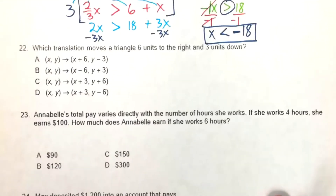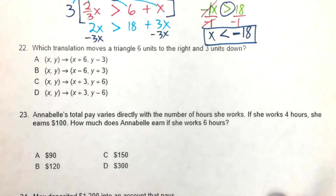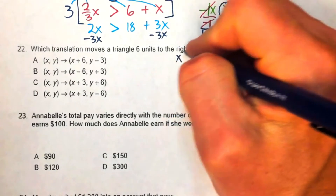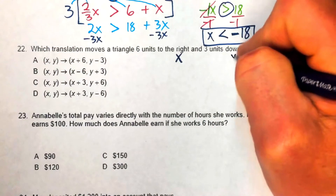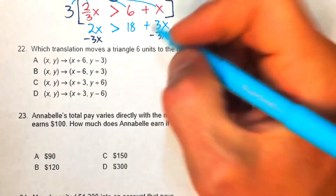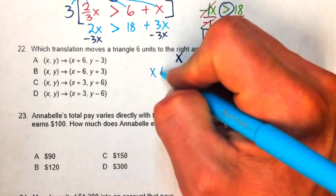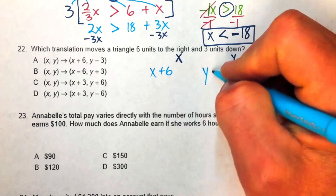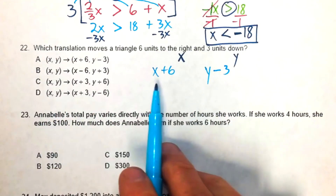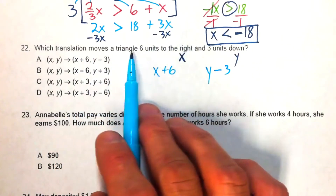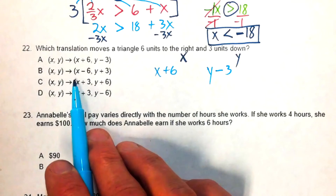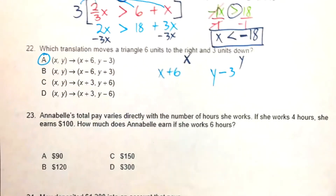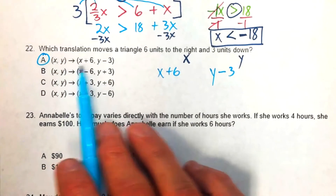Problem twenty-two: translate triangle A six units right and three units down. Moving right adds to the x-coordinate; moving down subtracts from the y-coordinate. The mapping is (x + 6, y − 3). The answer is A.